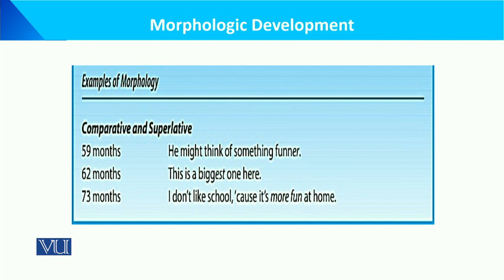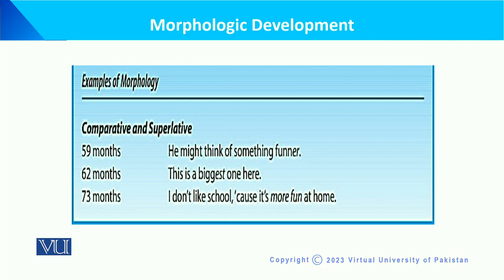یہ morphologic development کی examples ہیں — morphology کی comparative and superlative forms۔ At 59 months: 'he might think of something funer'; at 62 months: 'this is a biggest one here'; at 73 months: 'I don't like school cause it is more fun at home.' اس طرح ہم comparative اور superlative کے لحاظ سے morphology کو understand کر سکتے ہیں۔